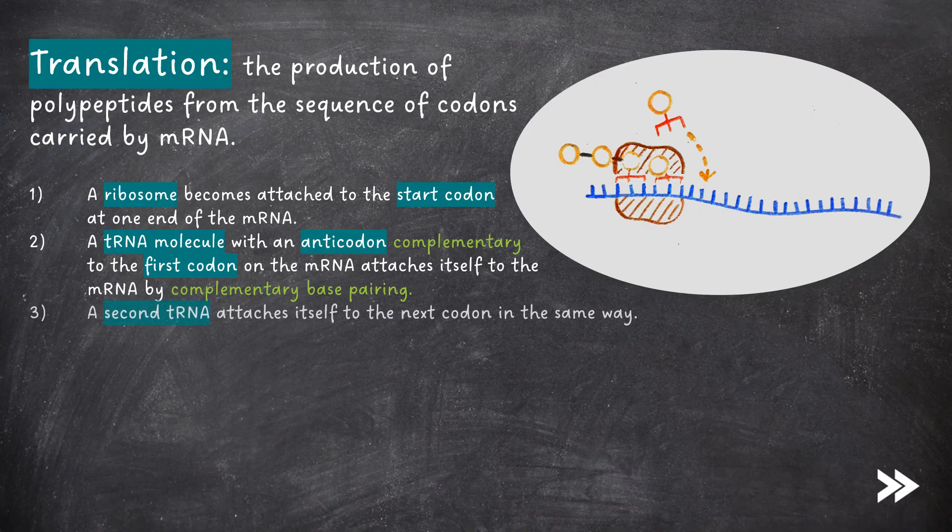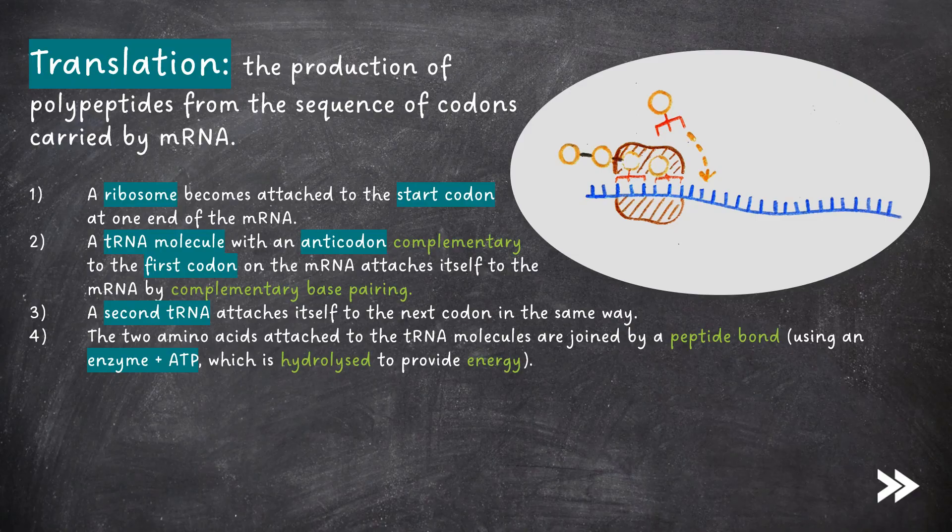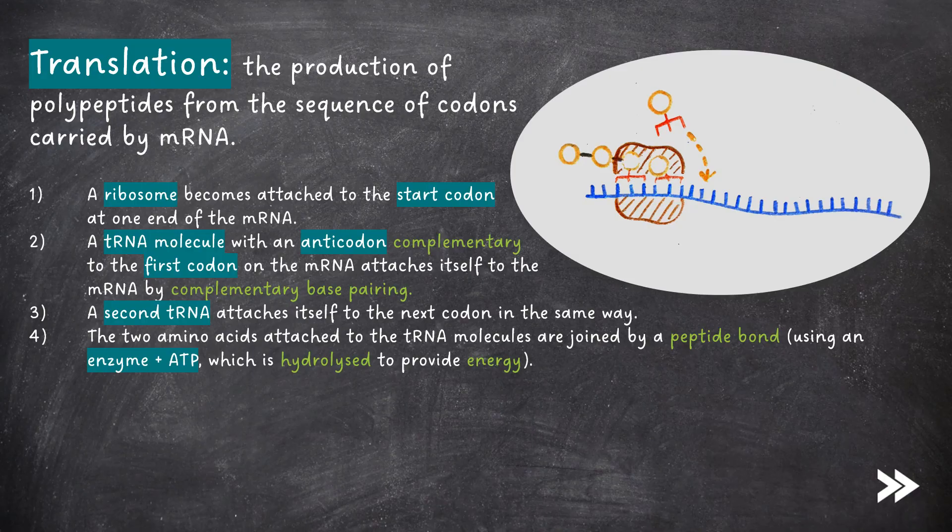Next, a second tRNA molecule attaches itself to the next codon in the same way. The two amino acids attached to the tRNA molecules are joined by a peptide bond using an enzyme and ATP, which is hydrolyzed to provide energy.